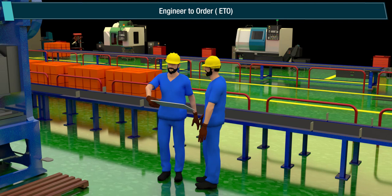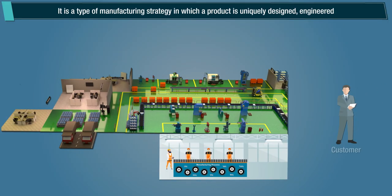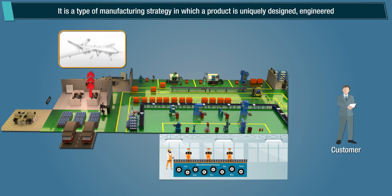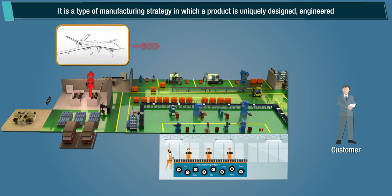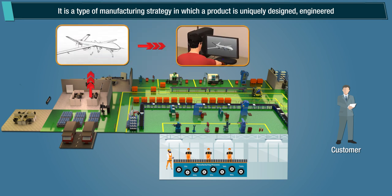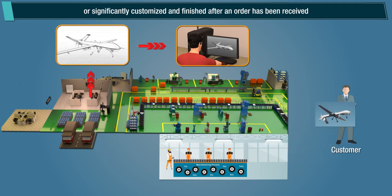Engineer-to-order, or ETO. It is a type of manufacturing strategy in which a product is uniquely designed, engineered, or significantly customized and finished after an order has been received.